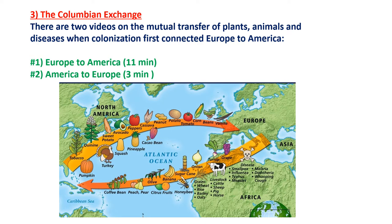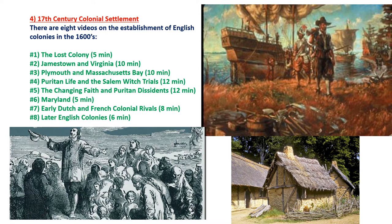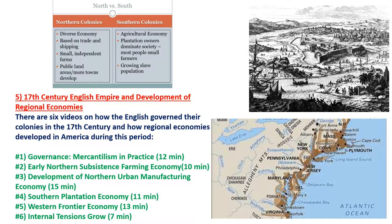There are two videos on the Columbian Exchange — the mutual transfer of plants, animals, and diseases that occurred when colonization first connected Europe to America. There are eight videos on 17th century colonial settlement, focusing on the founding of the actual 13 colonies, at least those founded during the 17th century. There are six videos on the 17th century English Empire and the development of regional economies, discussing how the English governed their colonies and how regional economies developed in America during this period.